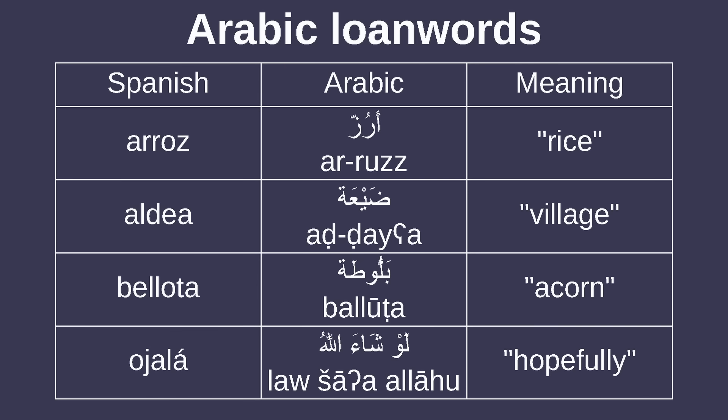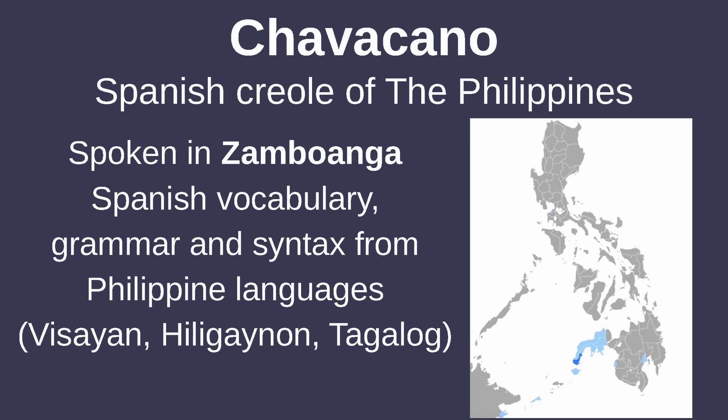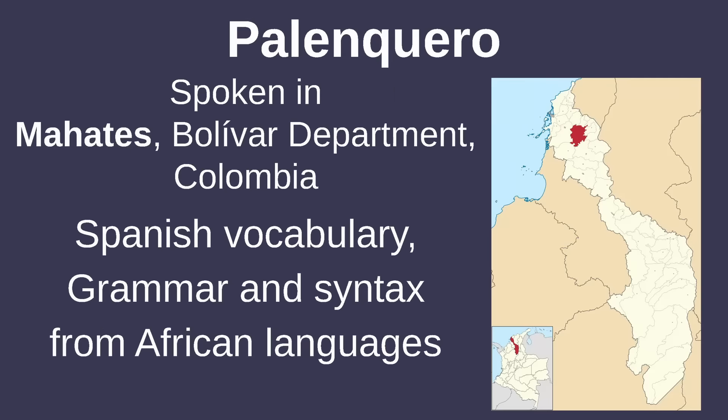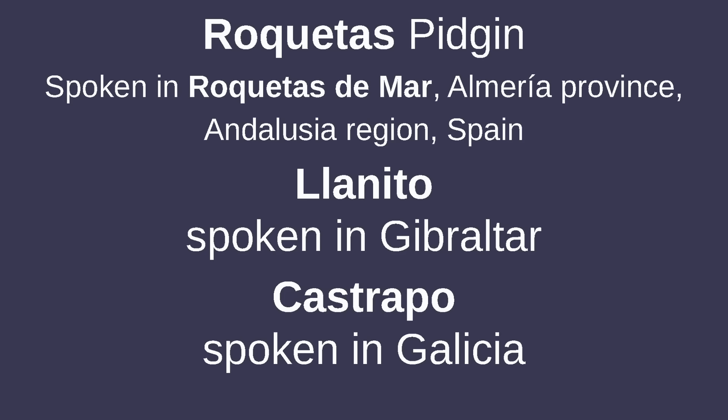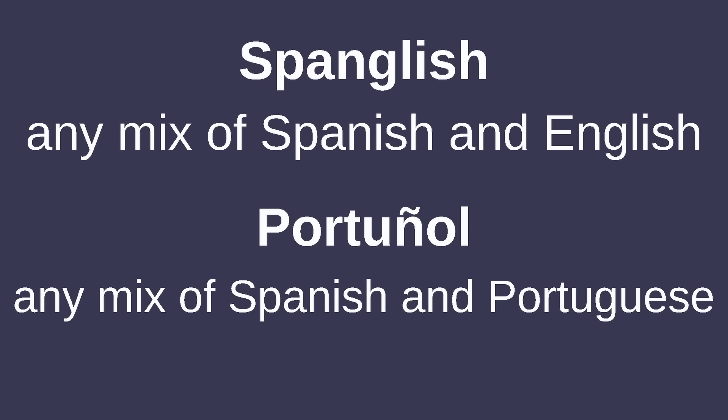Spanish has a relative lack of contractions compared to most other Romance languages, and there's a significant amount of words from Arabic from when the Moors ruled over Iberia. There are two Spanish creoles: Chavacano, spoken in some parts of the Philippines, and Palenquero, spoken in a small part of Colombia. I need to mention Silbo Gomero, a form of Spanish native to La Gomera and the Canary Islands, which is actually whistled. There's also Rioplatense, Yanito and Castrapo, Spanglish — any mix of Spanish and English — and Portuñol, which is a mix of Spanish and Portuguese.